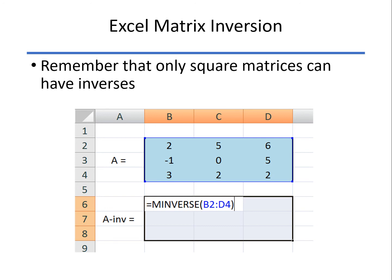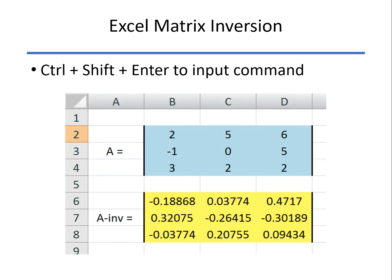Only square matrices can have inverses, so if you want to invert this matrix, use the m inverse command. Since this is a three by three, highlight a three by three, enter that command, and then control, shift, enter. That's the basics of matrices, and we'll talk about simultaneous equations, which will be an application of this in just a bit.